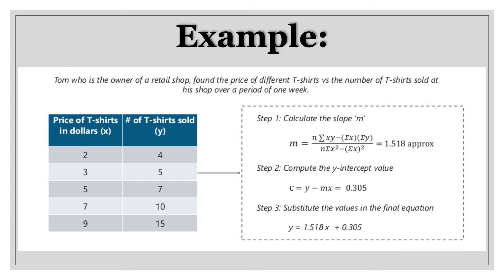The second step is to compute the y-intercept. Substitute the value of m from step one along with the values of x-bar and y-bar, and you will get c equal to 0.305. The final step is to substitute the values of m and c in your final equation, and you get the equation y equal to 1.518x plus 0.305. This is your line of best fit.